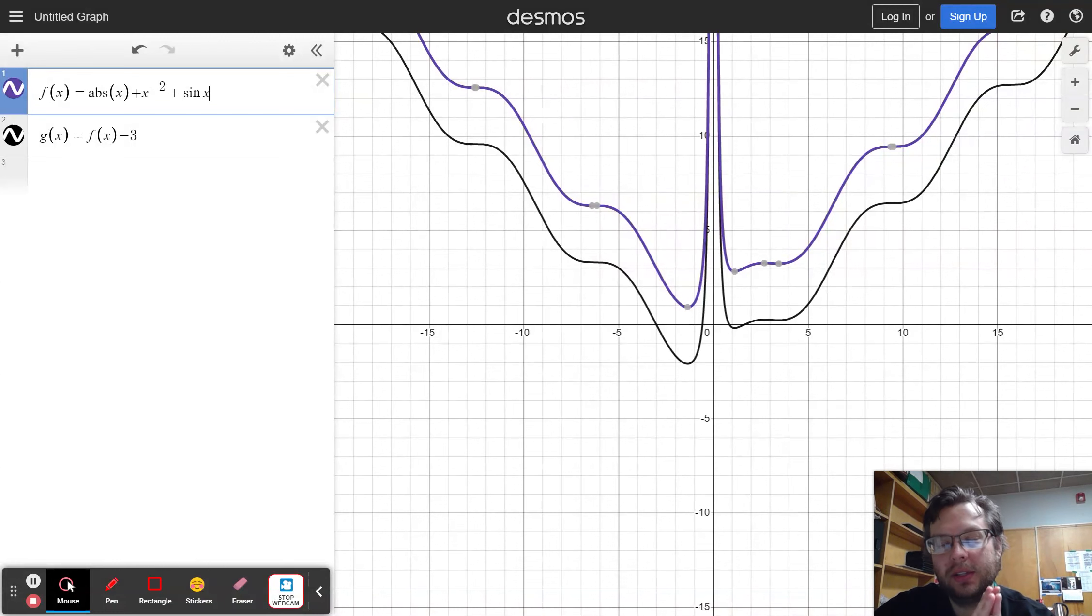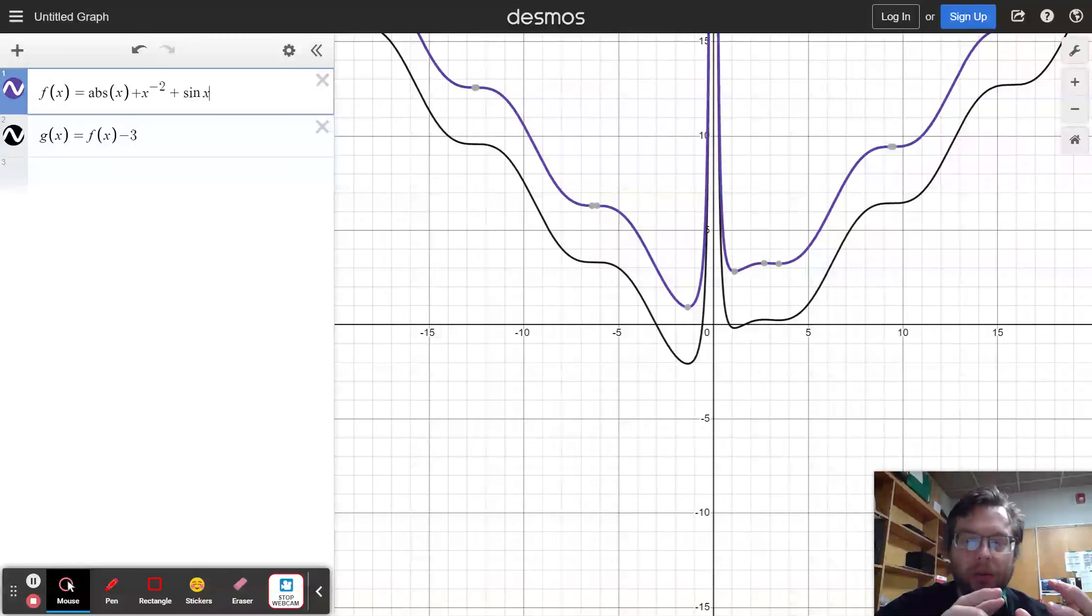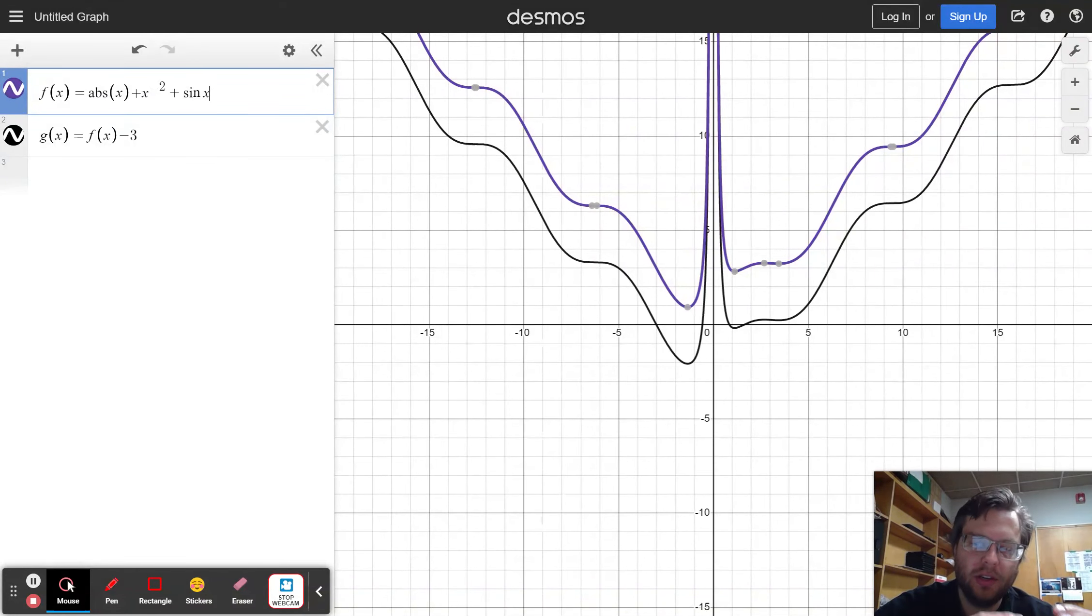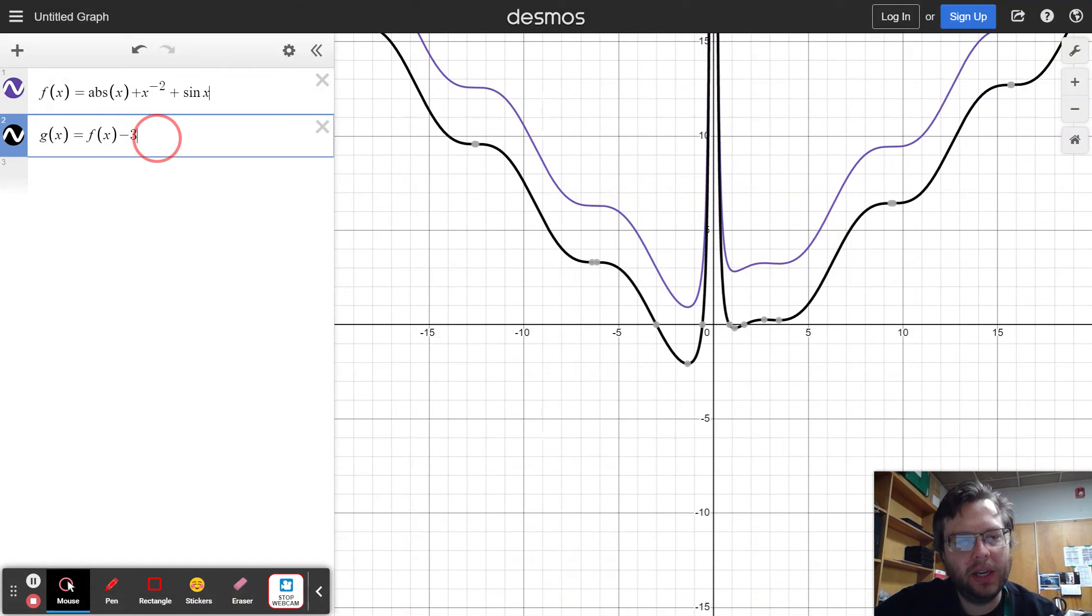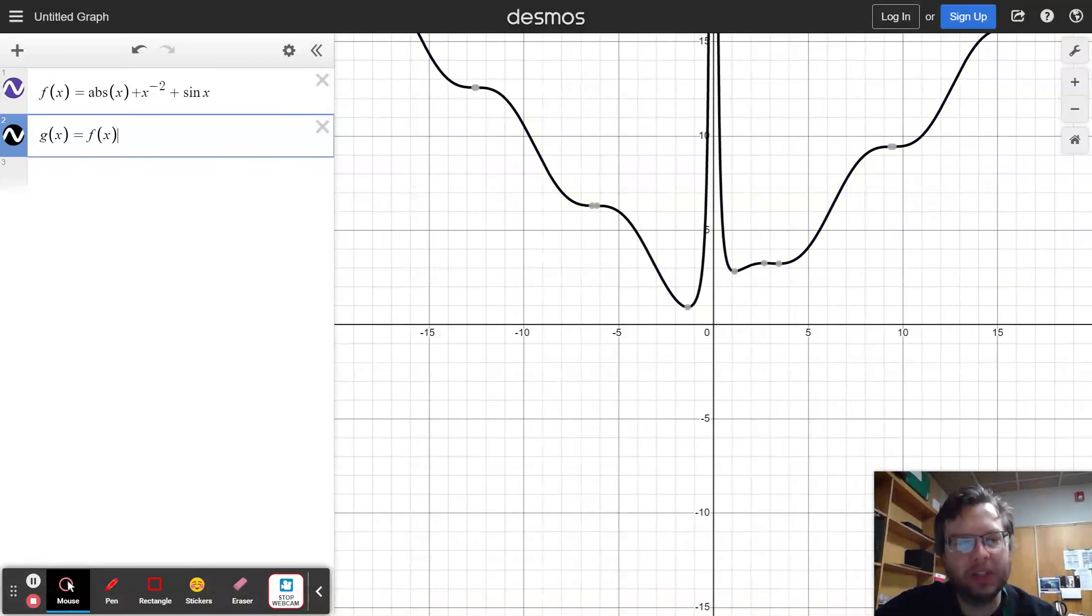We're not looking in this unit at one particular type of function. We're just looking at what happens to any function when you do a certain thing to the equation. How does that change the graph that we see? So, that was all translating, sliding things left, right, up, or down. What we're going to look at now is how could we stretch things out.